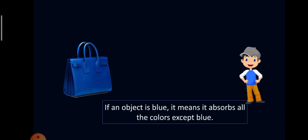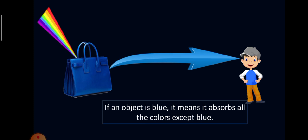Same goes with other objects like this blue bag. It absorbs all the colors and only the blue color is being reflected. So next time you see other objects with different colors, remember that all are being absorbed and only the color that you see is being reflected.